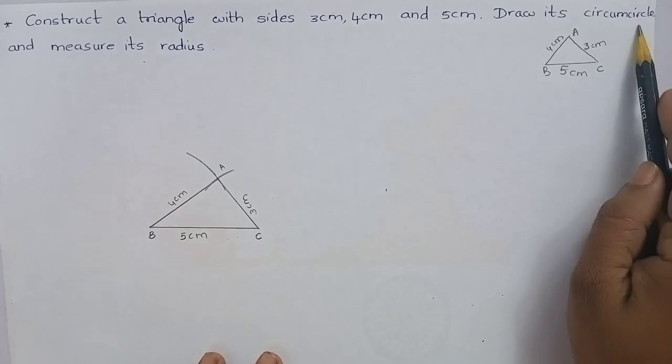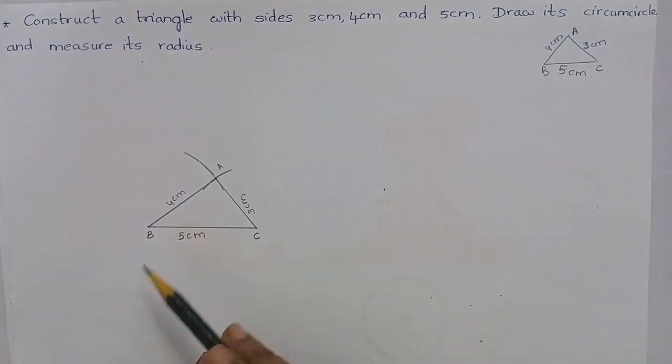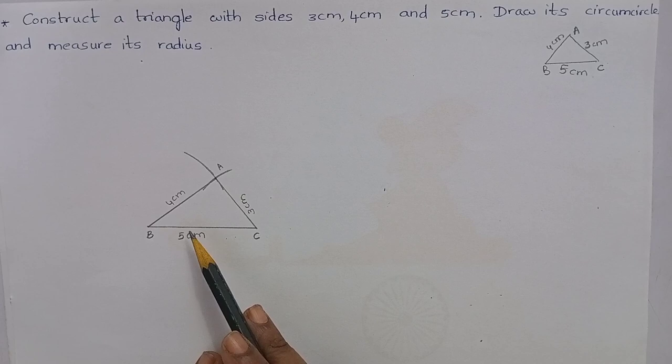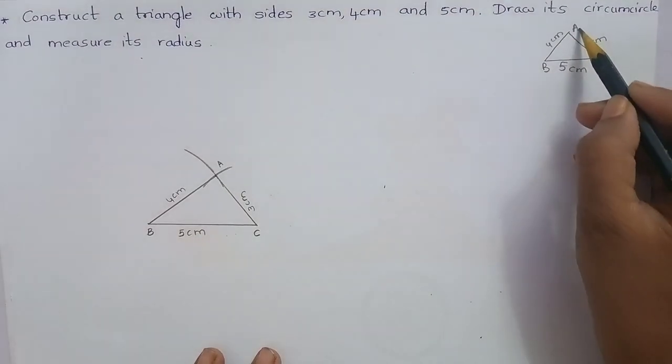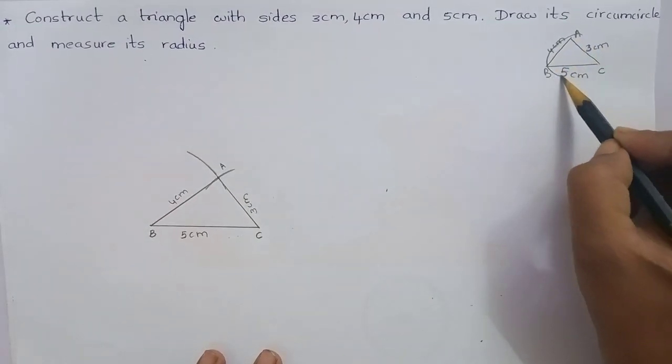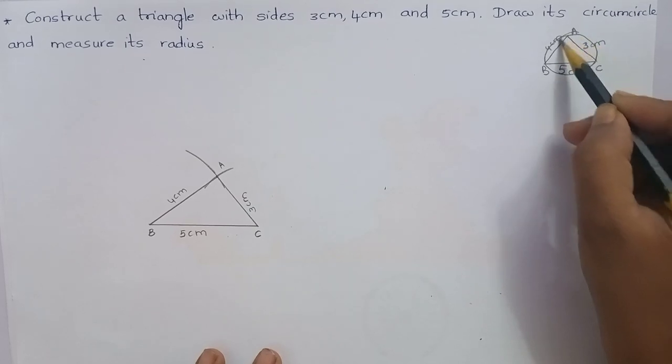Draw its circumcircle. See how? We have to draw a circumcircle to this triangle. It means like this.